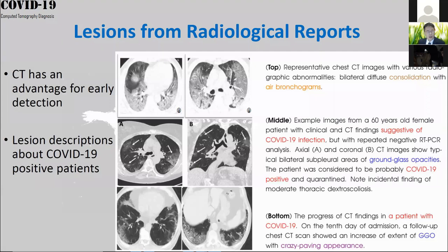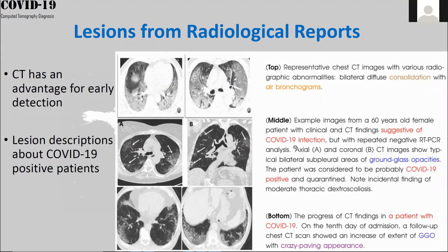How can we identify lesions from images? Radiological reports describe all this lesion information in detail. For example, for a typical image with a radiological report, the report will tell you exactly what happened to your lung — whether there is GGO, or GGO with crazy paving appearance. Radiologists can describe precisely what happened to the lung.